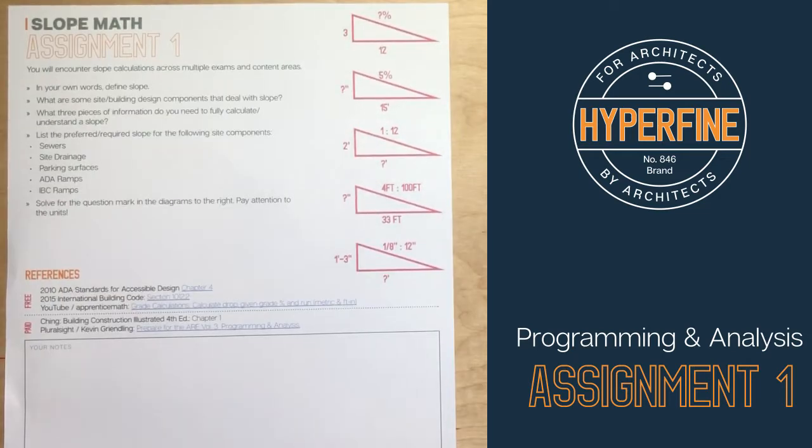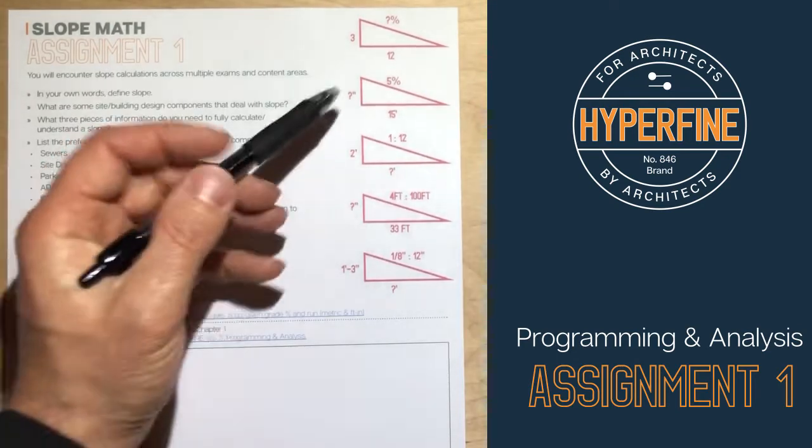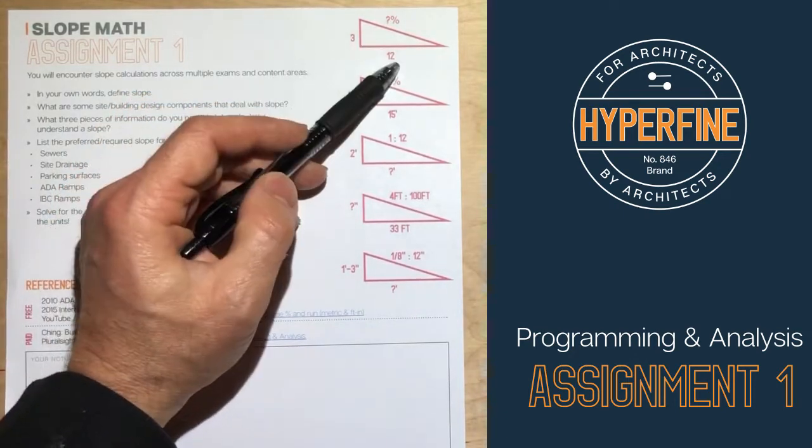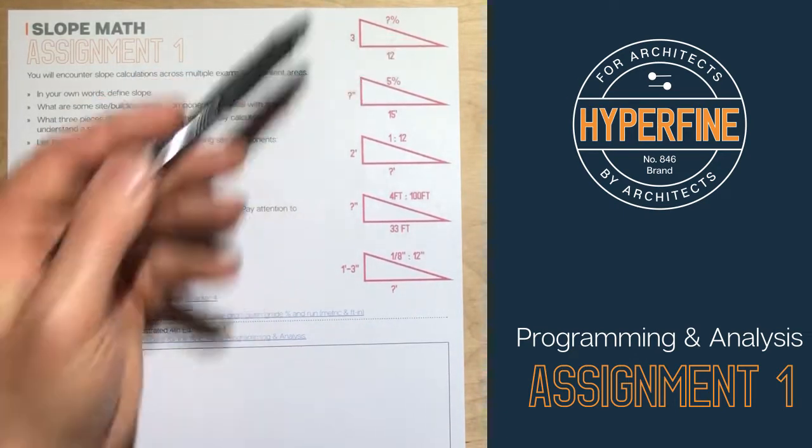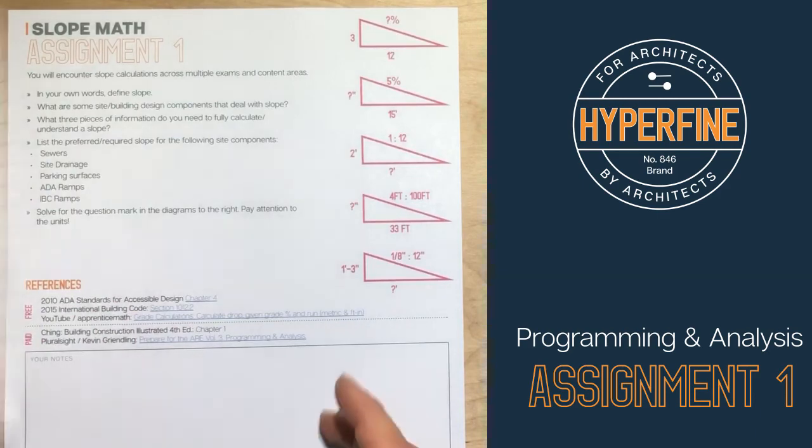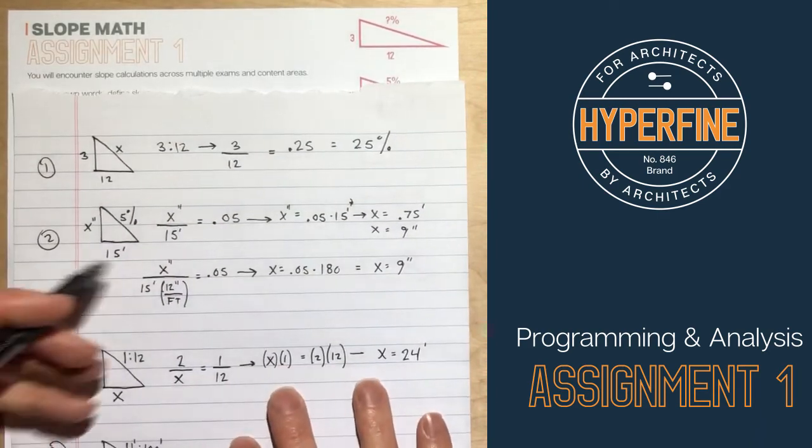Since this is assignment one, I'm going to put this one on YouTube. So if you're watching this in the course, just look at your course files. And if you're watching this on YouTube, check out the description for more information about what this is that I'm talking about. All right. So the first one, you're given a slope of three and 12. You're asked to find what's the slope percentage. And that's pretty easy.